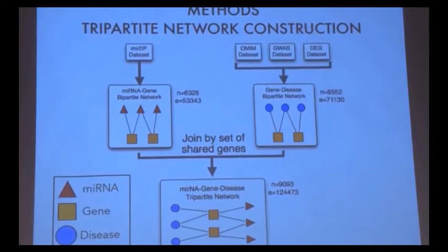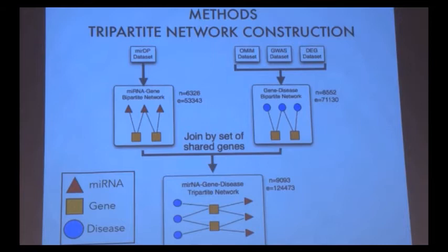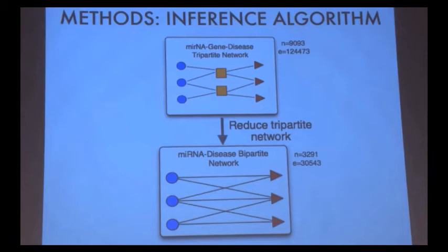Because there are no experimentally validated direct micro-RNA-to-disease connections, we had to predict these associations. To do so, we used four massive datasets — MIRDIP, OMIM, GWAS, and DEG. From these datasets, two bipartite networks were created: micro-RNA-to-gene and gene-to-disease. A bipartite network is one that contains two different types of nodes. These two bipartite networks were aligned along their set of shared genes to form a tripartite network of micro-RNA-to-gene-to-disease.